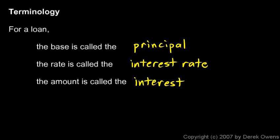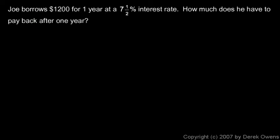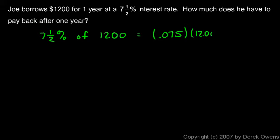Here's an example: Joe borrows twelve hundred dollars for one year at a seven and a half percent interest rate. How much does he have to pay back after one year? He's going to pay back the interest — seven and a half percent of twelve hundred — in addition to the original twelve hundred. Seven and a half percent is 0.075, times twelve hundred, which comes out to ninety dollars. That's how much interest he has to pay.